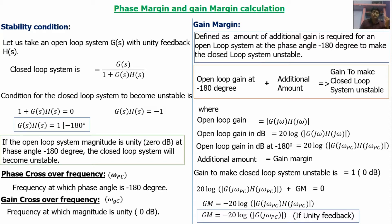The gain of the open loop system at minus 180 degrees is 20 log|G(jω_pc)|. Some additional gain must be added to make the open loop gain equal to 0 dB. The amount to add is minus 20 log|G(jω_pc)|. Adding this makes the open loop system equal to 0 dB, so the gain margin equals minus 20 log|G(jω_pc)|.